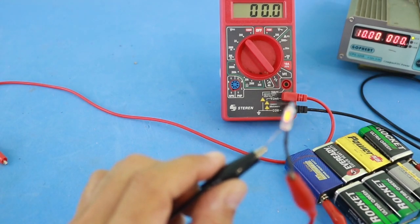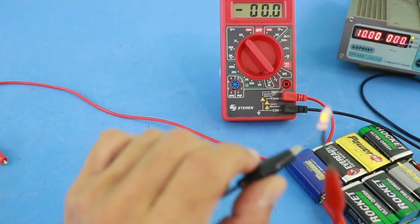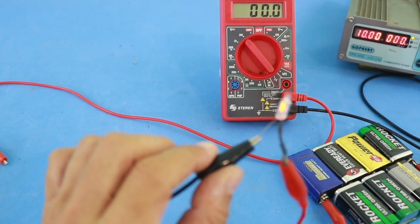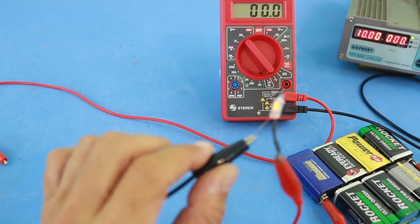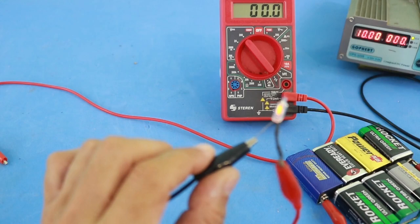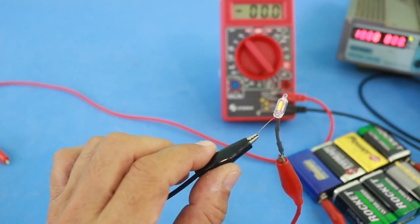An interesting characteristic of this lamp is that it needs a certain voltage to turn on but it has high hysteresis. That is, we can now decrease the voltage and the lamp will remain on.